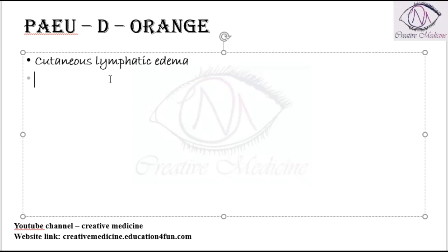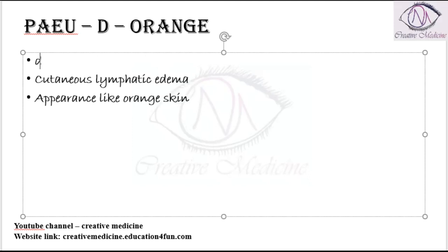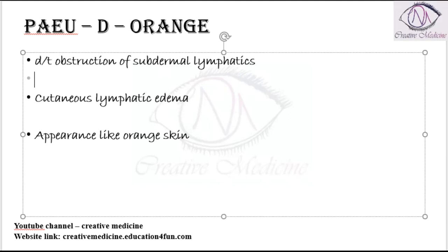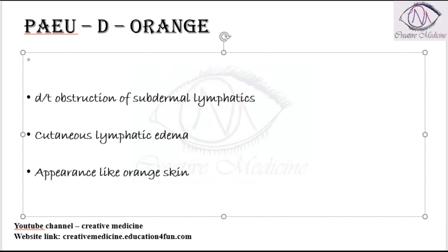In cutaneous lymphatic edema, the infiltrated skin is tethered by the sweat ducts, giving an appearance like orange skin. This cutaneous lymphatic edema is mainly due to the obstruction of the subdermal lymphatics. Obstruction of subdermal lymphatics results in cutaneous lymphatic edema, giving the appearance of orange-like skin.